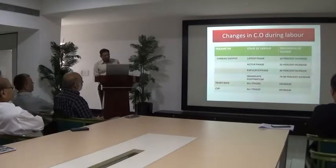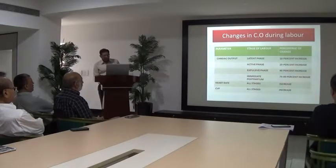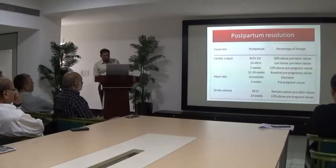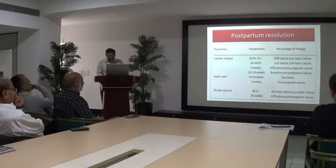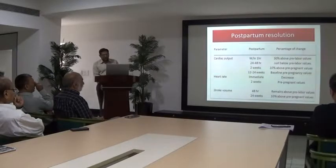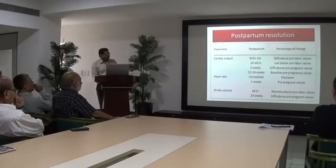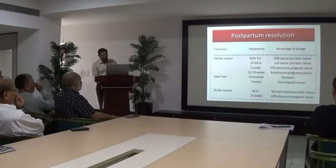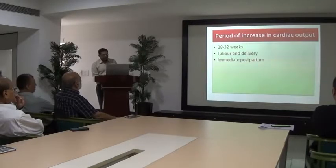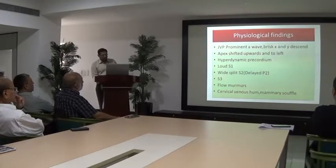The chart shows changes in cardiac output, heart rate, and CVP. When do these values return to pre-labor levels? Cardiac output returns to pre-pregnancy levels after 24 weeks postpartum. Heart rate returns to pre-pregnancy levels by 2 weeks postpartum, and stroke volume returns to pre-pregnancy levels after 24 weeks. The period of peak increase in cardiac output is 28 to 32 weeks, during labor, and the postpartum period.